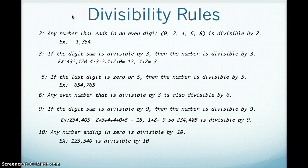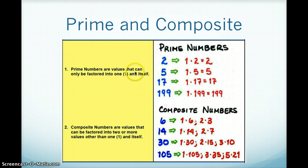Alright, 10, any number ending in a 0 is divisible by 10, such as 123,340, ends in a 0, so it's divisible by 10. Alright, with that said, kind of reviewing those, it helps to make you understand the difference between a prime and a composite number.